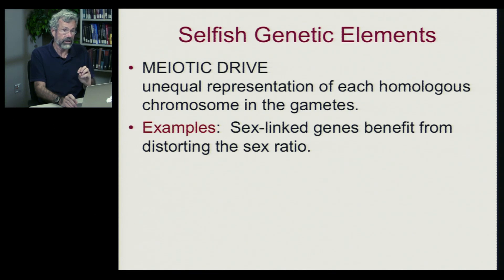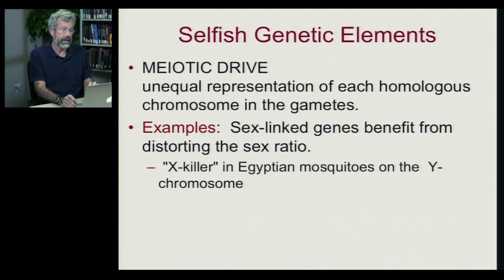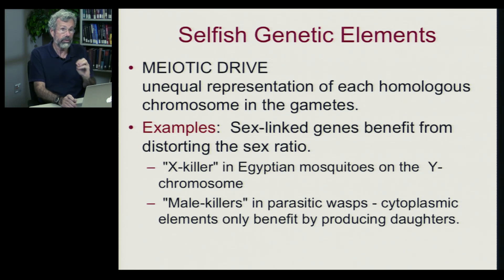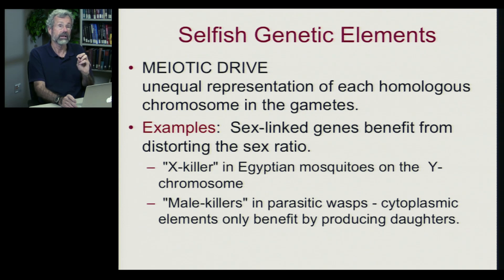Let me start with a specific example. This is often something we see where there's chromosomal sex determination. There are genes on the sex chromosome — sex-linked genes — that can benefit from distorting the sex ratio. The prime example is called the X-killer, which is found in Egyptian mosquitoes and is located on the Y chromosome. Another way we can get this kind of meiotic drive is in what are called male killers, found in a number of parasitic species of wasps. These are cytoplasmic elements that benefit by the production of daughters.